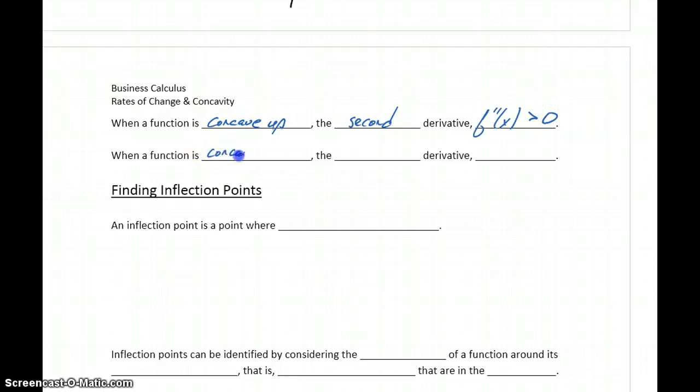A function is concave down when the second derivative, f double prime of x, is less than 0.